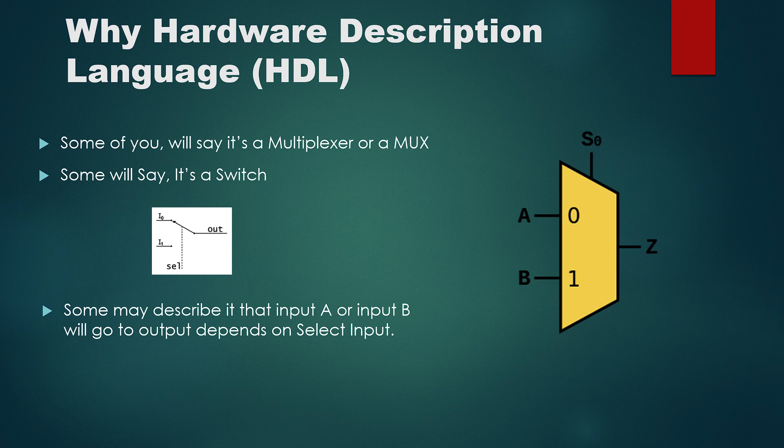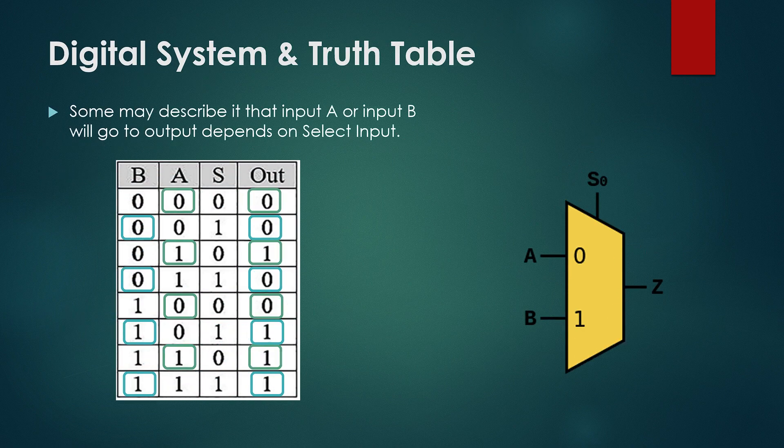If you look at this logic symbol on the screen, the question is: what do you think this is? Some of you will say it's a multiplexer or mux, or some will say it's a switch. Some may describe its function: that input A or input B will go to the output depending on the select input. Say, if select input is 0, input A will be the output, or if select is 1, input B will be the output. And I will say all the statements are correct. So based on the description, if you wanted to map a truth table for a multiplexer, it would be like this.